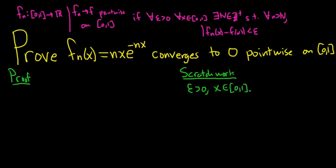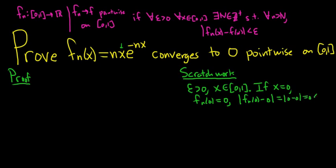The easiest case is if x is equal to 0. If x equals 0, then f sub n of 0 is just 0, because you get n times 0 in the numerator, so the whole thing is 0. In this case we can choose any N, and the difference between f sub n of 0 and 0 is 0 minus 0, which equals 0, which is less than epsilon. So if x is 0 we can choose any N and the proof is complete.